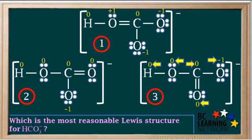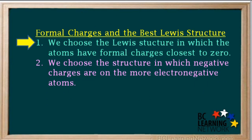You can see that in structure 3, the only atom with a formal charge that is not zero is the oxygen on the right side. Again, this is the oxygen atom with the three lone pairs around it. In choosing the most reasonable Lewis structure for the bicarbonate ion HCO3-, we choose the one in which the combination of formal charges is closest to zero.